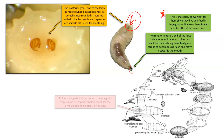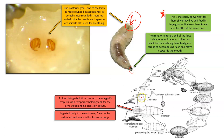As food is ingested, it passes into the maggot's crop — a temporary holding tank for the larva's food where no digestion occurs. You can see the crop increasing in size as it goes from first to second to third instar. Typically you can only see the crop on the second instar; once you get to the third instar, you can't see it because it's covered in fat. Importantly, we can harvest tissue from a larva's crop and analyze it not only for DNA but also for toxins and drugs.